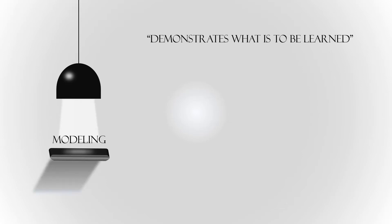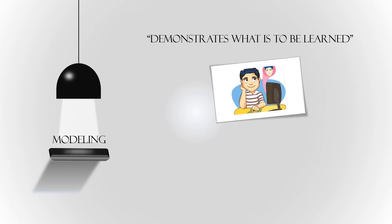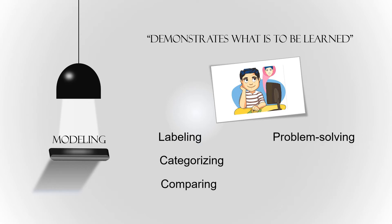Modeling: the teacher demonstrates what is to be learned. Once the material has been presented, the teacher uses it to show students examples of what is expected as an end product of their work. The critical aspects are explained through labeling, categorizing, comparing. Students are taken to the application level of problem solving, comparison, or summarizing.